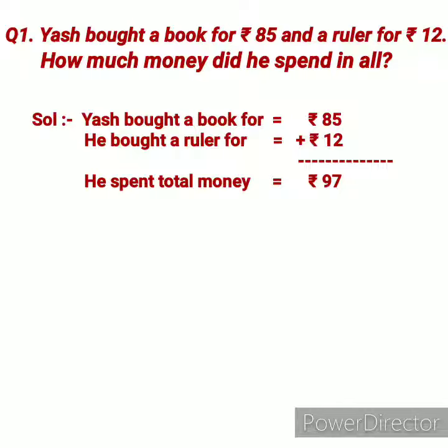So we need to add rupees 85 and rupees 12. On adding rupees 85 and rupees 12, we get rupees 97. So Jas spent rupees 97 in all.